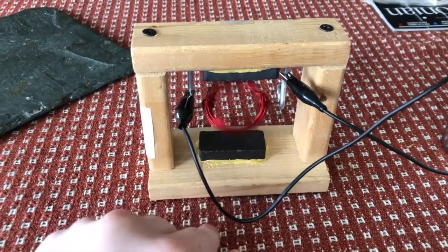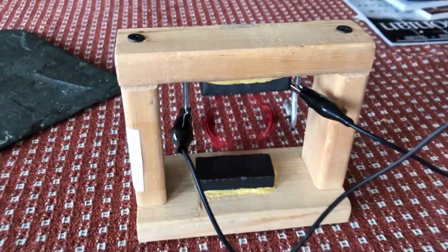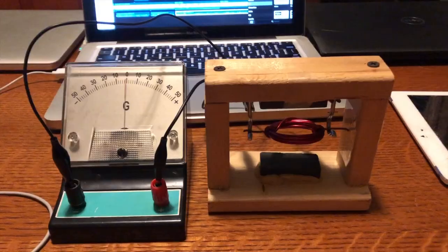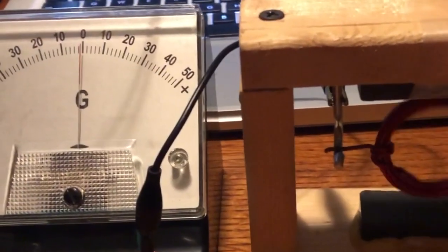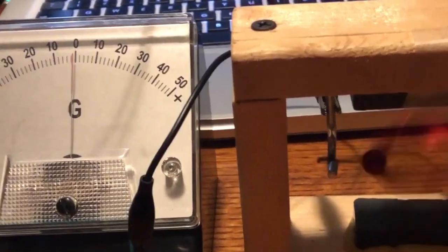If we put a current into the wire, it will spin. We can turn electrical energy into mechanical energy and we call it a motor. If we spin the wire near the magnet, we will create a current in the wire. We can turn mechanical energy into electrical energy, we call this a generator.